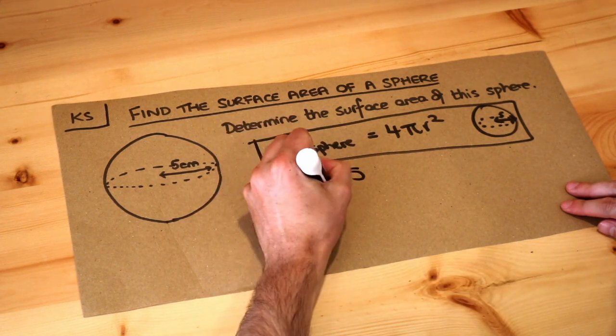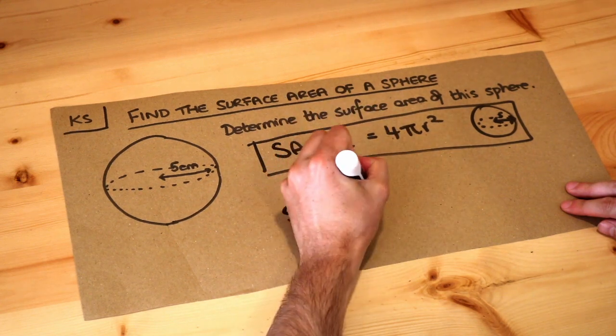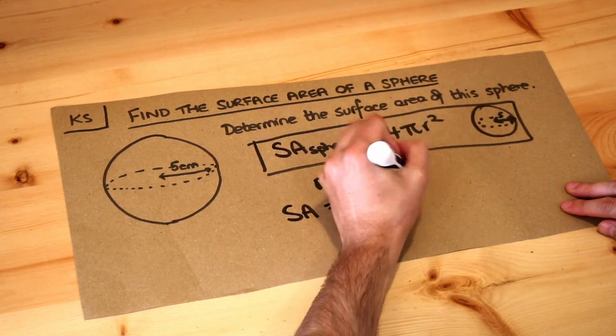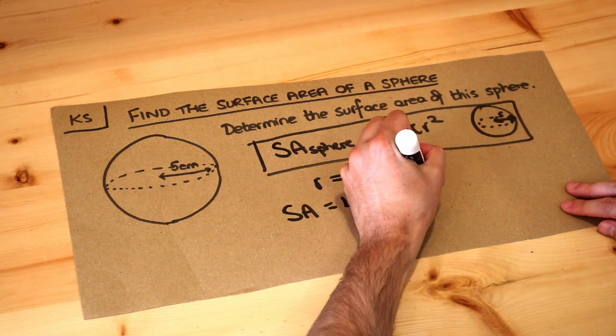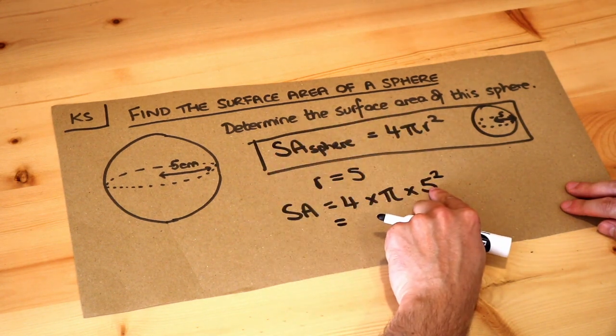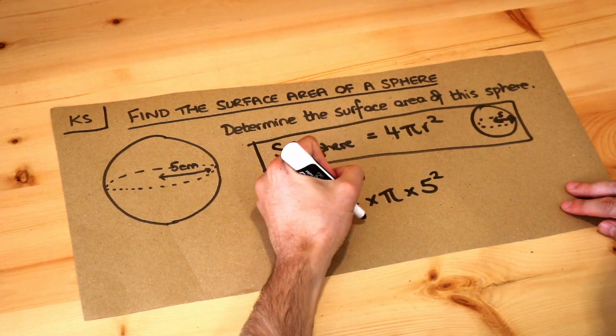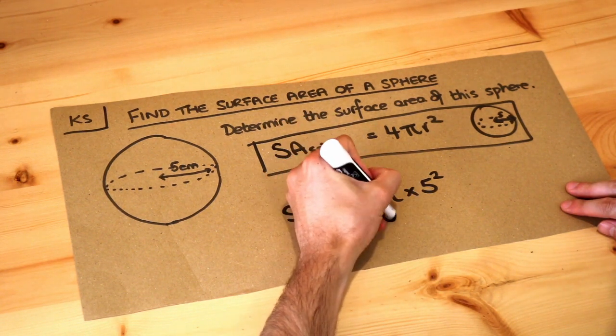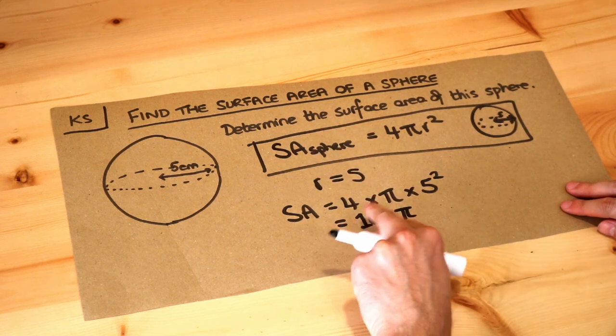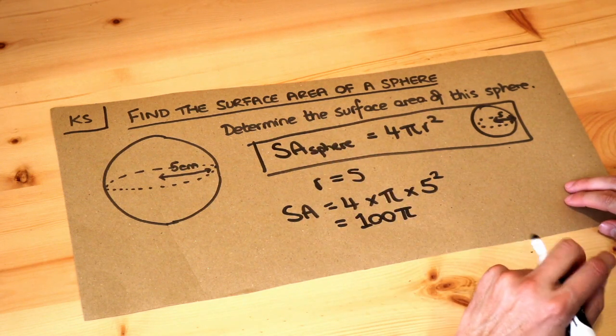So the surface area is 4 times π multiplied by the radius squared, so 5 squared. Now let's simplify that. 5 squared is 25 times π times 4 is 100. So we could write the answer in an exact way as 100π. We've got 100 lots of π, 100π.